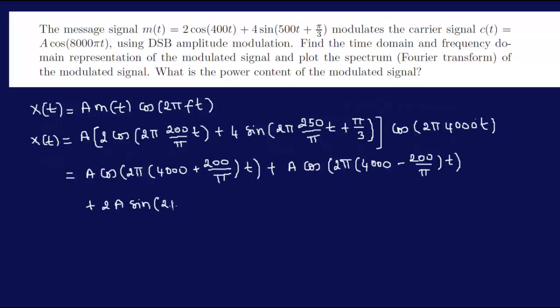I have 2A*sin(2π(4000, 250/π)T), plus now I have a plus theta here which is π/3, minus 2A*sin(2π(4000 - 250/π)T + π/3).